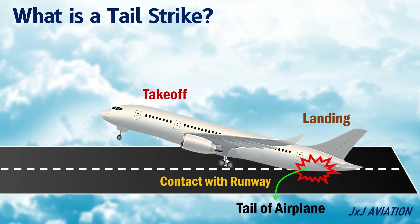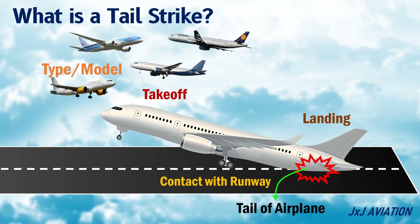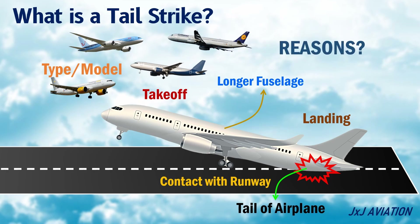Tail strike occurrence depends on the aircraft type and model. Generally, aircraft variants which have a longer fuselage are more susceptible to a tail strike. Let's look at some of the reasons for a tail strike to occur.